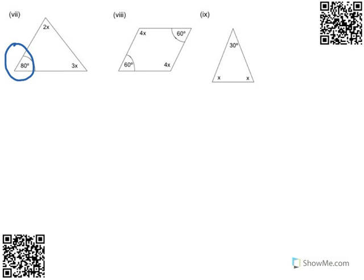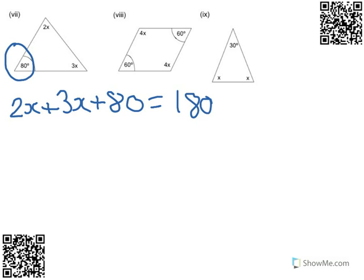I've got 2x. I've got plus 3x plus 80 will equal, it's a triangle, so it's 180 degrees. Let's simplify that. I've got 5x plus 80 equals 180 degrees. Right, now we've formed the equation, we need to solve it.